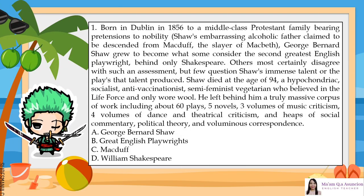1. Born in Dublin in 1856 to a middle-class Protestant family bearing pretensions to nobility, Shaw's embarrassing alcoholic father claimed to be descended from Macduff, the slayer of Macbeth. George Bernard Shaw grew to become what some consider the second greatest English playwright, behind only Shakespeare. Others most certainly disagree with such an assessment, but few questioned Shaw's immense talent or the plays that talent produced. Shaw died at the age of 94, a hypochondriac, socialist, anti-vaccinationist, semi-feminist vegetarian who believed in the life force and only wore wool. He left behind him a truly massive corpus of work including about 60 plays, 5 novels, 3 volumes of music criticism, 4 volumes of dance and theatrical criticism, and heaps of social commentary, political theory, and voluminous correspondence.